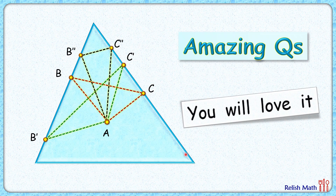The question is: find the triangle which will have the minimum perimeter among these infinitely many triangles. In other words, we have to find the location of point B and point C on the two side lengths so that the triangle formed will have minimum perimeter.